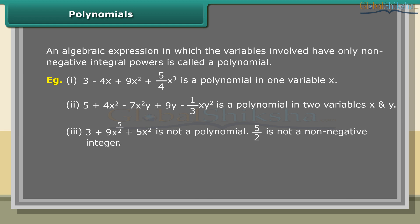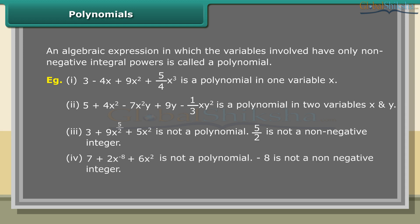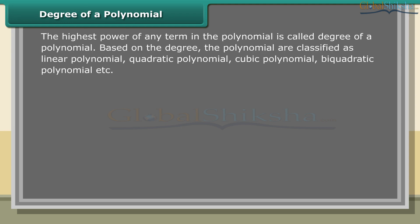Example 3: 3 plus 9x^(5/2) plus 5x² is not a polynomial, because 5/2 is not a non-negative integer. Example 4: 7 plus 2x^(-8) plus 6x² is not a polynomial, because minus 8 is not a non-negative integer.